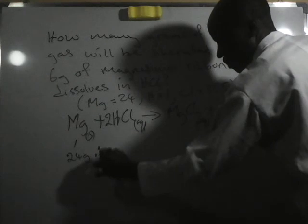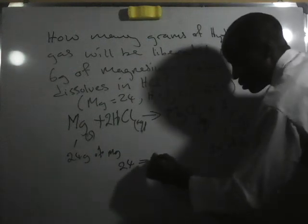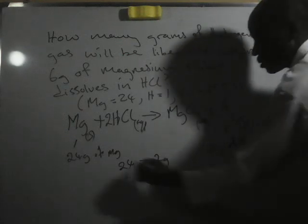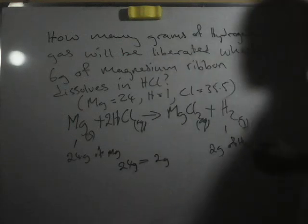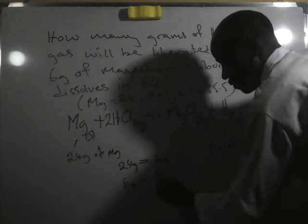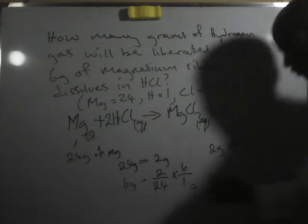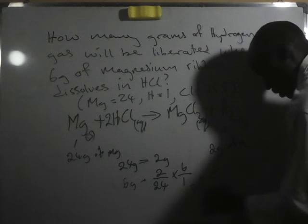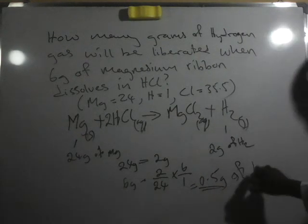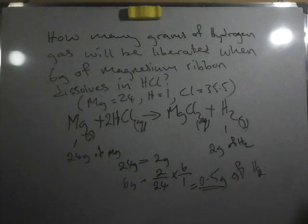So 24 grams of magnesium equals 2 grams of hydrogen. Then 6 grams will give us: 2 over 24 times 6 over 1, which gives us 0.5 grams of hydrogen.